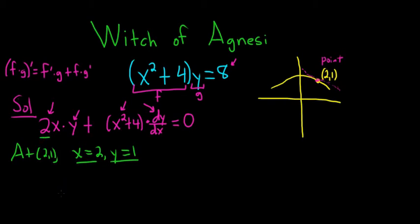So it'll be 2 times 2 times 1, because x is 2 and y is 1, plus and then x is 2 so it'll be 4 plus 4. So 4 plus 4 because 2 squared is 4, dy/dx and this is equal to 0.